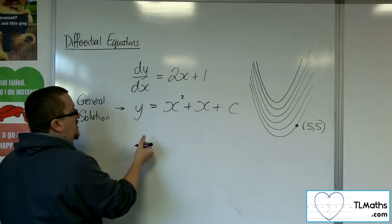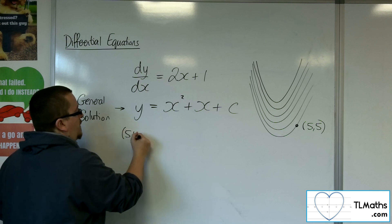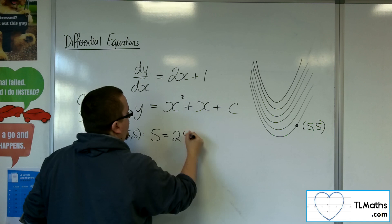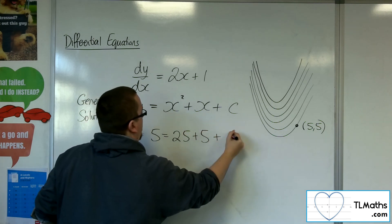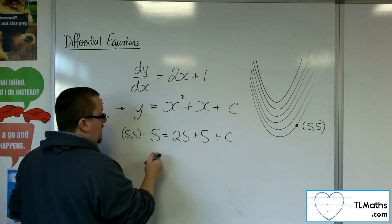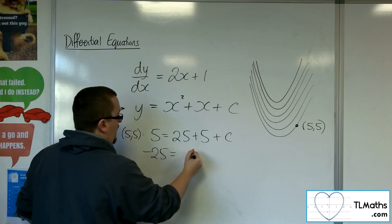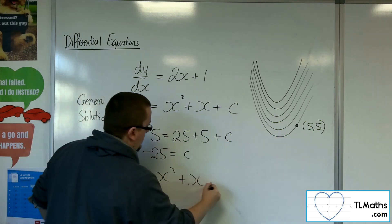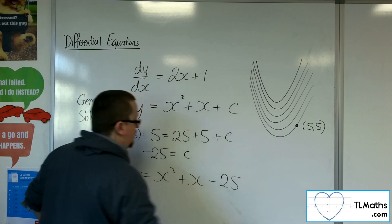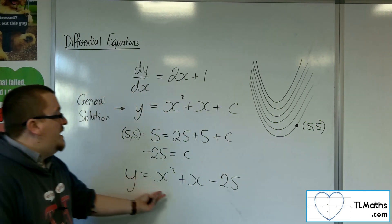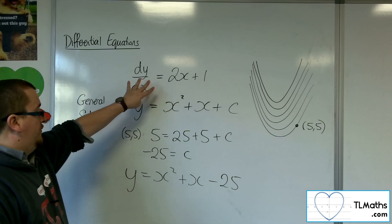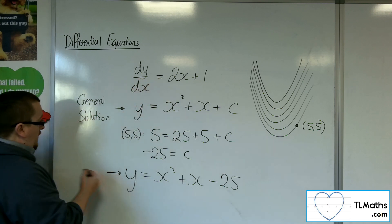So we can substitute in the 5, 5. So we get 5 equals 25 plus 5 plus c. So that's 30. Take 30, so minus 25 is c. So we get y equals x squared plus x minus 25. So this is what we would call a particular solution to the original differential equation.